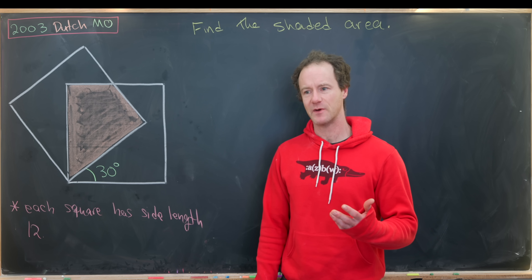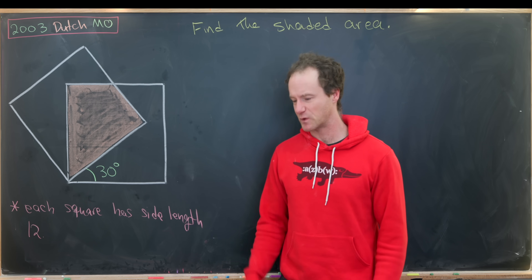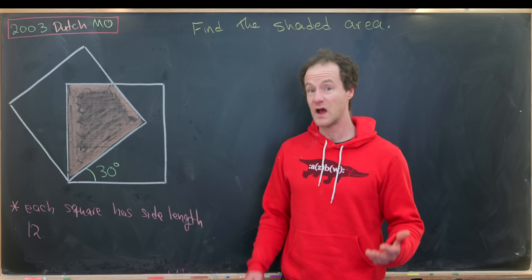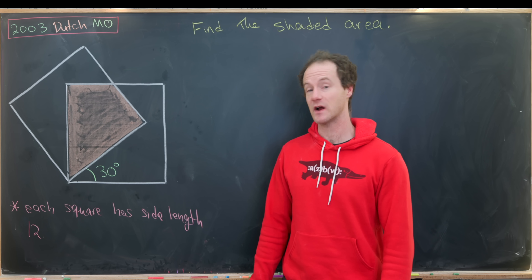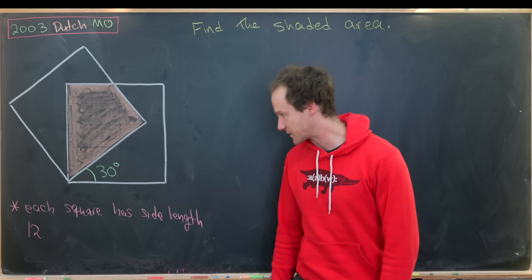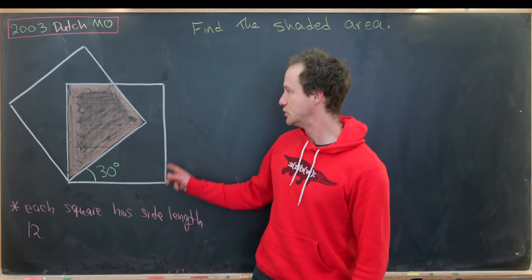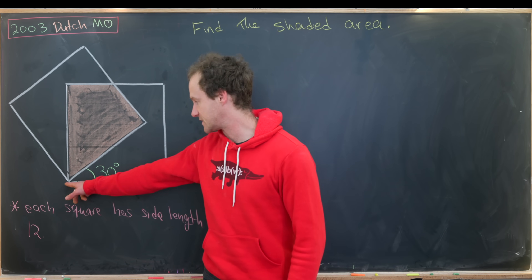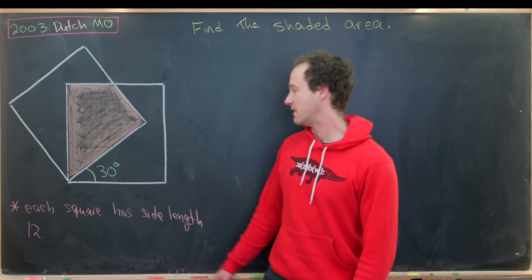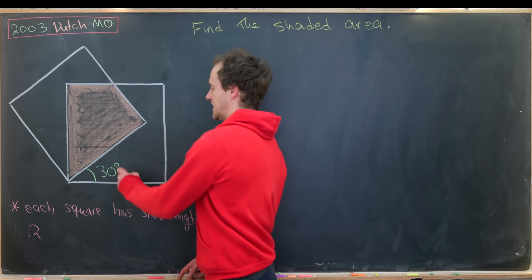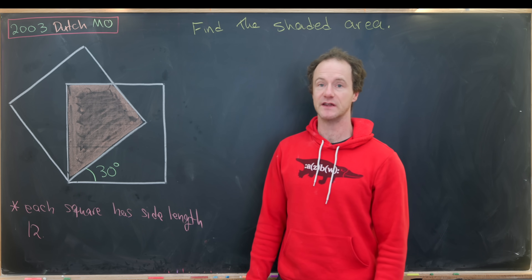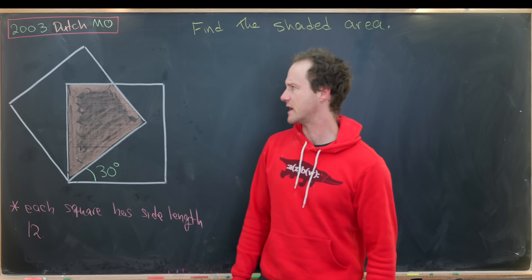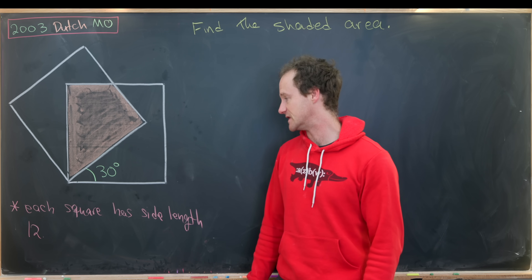Maybe if you guys want to post in the comments what you think the most ridiculous way to do this problem is before I go into the solution and see if you guess right. So let's look at the problem. What we have here are two squares of side length 12. They share a vertex, and this one that's rotated has been rotated 30 degrees. Our goal is to find the shaded area, which is contained in each of these squares.